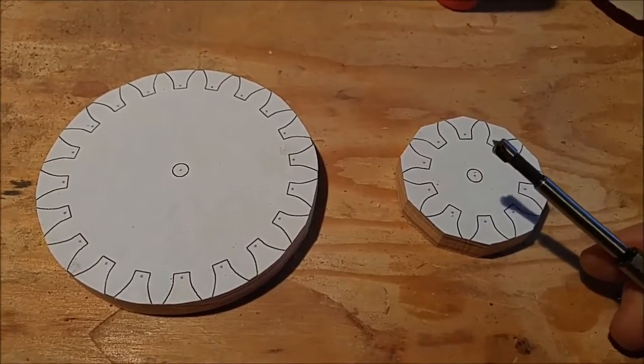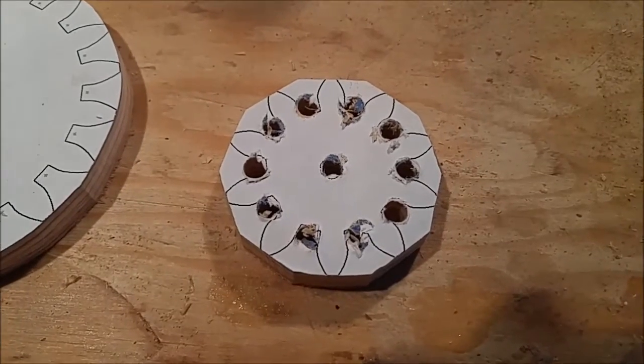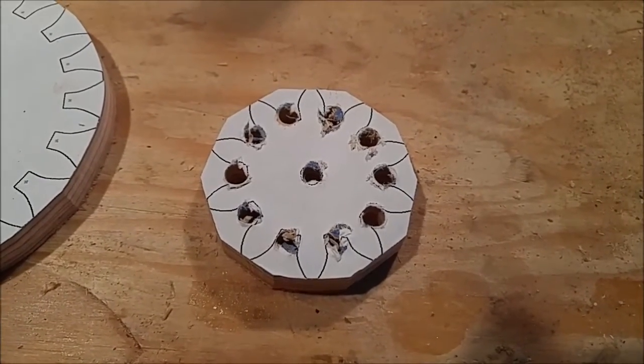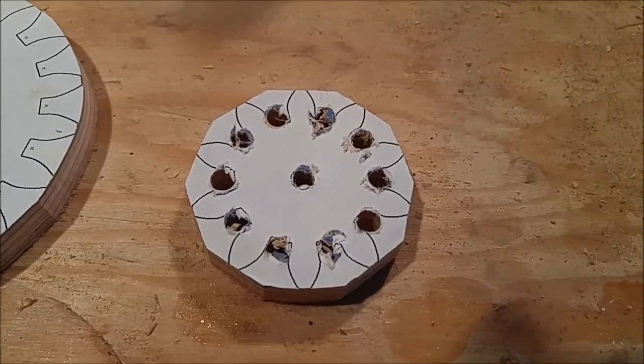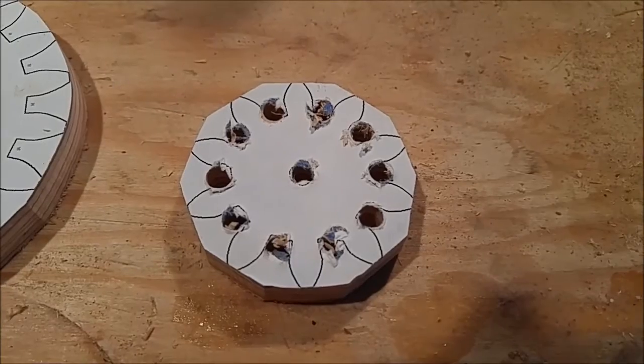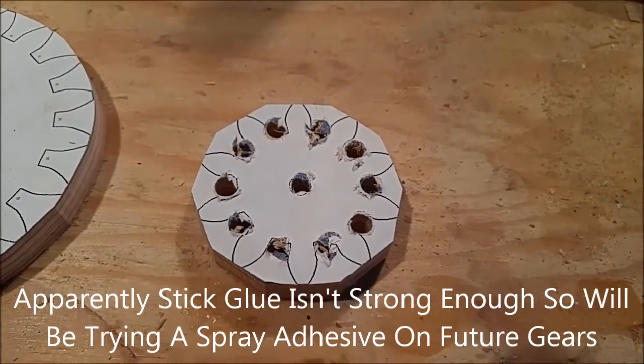Secondly, the Forstner bit just drills a cleaner hole. With one of the gears drilled out with a Forstner bit, I was a little bit surprised that the Forstner bit tended to tear at the pattern a little bit more than I thought it was going to, especially if you go fast. The slower you go, the less it's going to tear out. That was one observation.